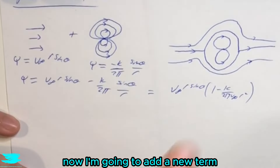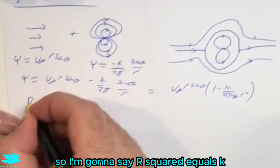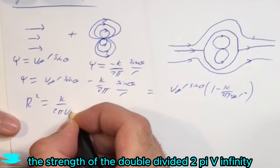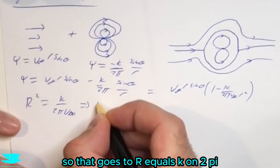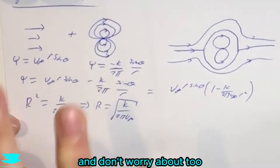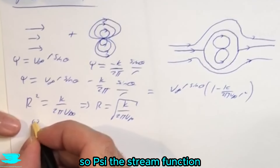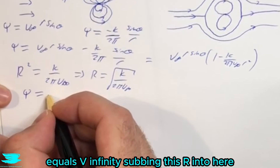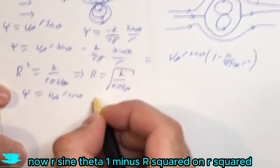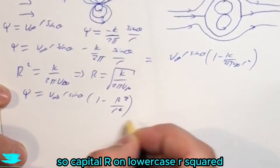Now I'm going to substitute a new term in — it may not make sense immediately, but bear with me. I'm going to define R² = k / (2π · v∞), so R = √(k / (2π · v∞)). Substituting this capital R into the stream function, we get ψ = v∞ · r · sinθ · [1 − R² / r²].